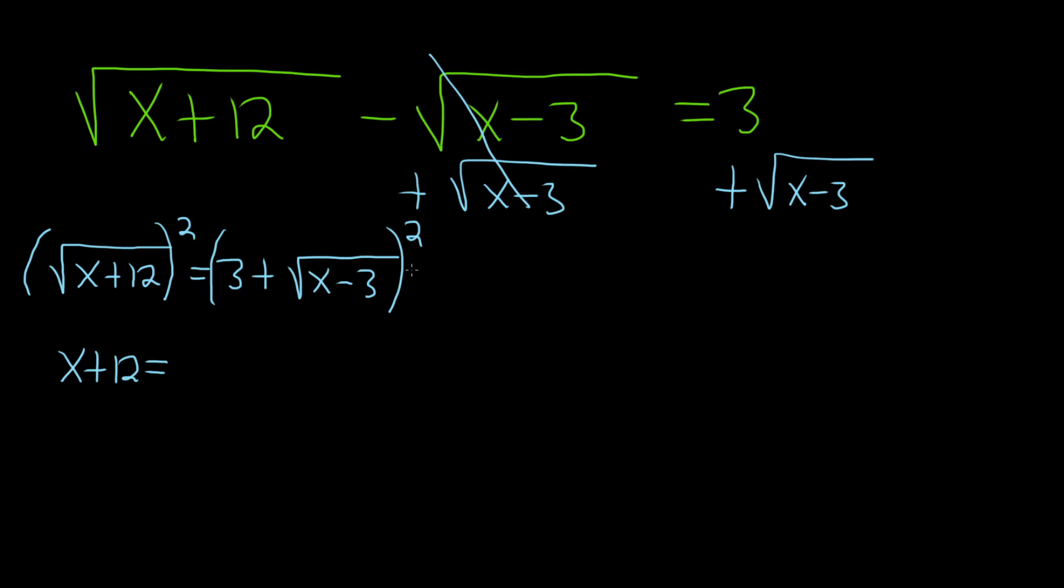The right side requires more work. One way to expand the square is to write it out twice: 3 plus the square root of x minus 3, times 3 plus the square root of x minus 3.